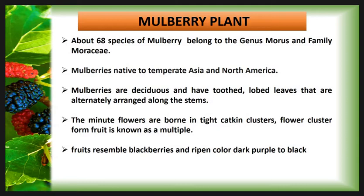The fruit of mulberry somewhat resembles blackberries, and the ripened color ranges from dark purple to black. Currently mulberry is used in different ways: in sericulture, for fruit production, for wood production, in medicines, in landscaping, and mulberry plants are also planted in urban conditions and house gardens.